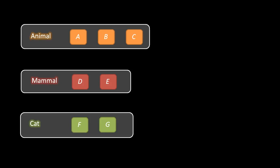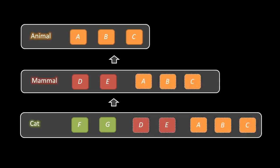If we link these classes together by inheritance, such that Cat inherits from Mammal and Mammal inherits from Animal, the Mammal class will automatically inherit all of the members of the Animal class. In turn, the Cat class will inherit all of the members of the Mammal class, including the members which Mammal itself inherited from Animal. So even though when we wrote the Cat class we only specified members F and G, because Cat inherits from Mammal and Mammal inherits from Animal, Cat has the members A, B, C, and D. This is automatic inheritance.